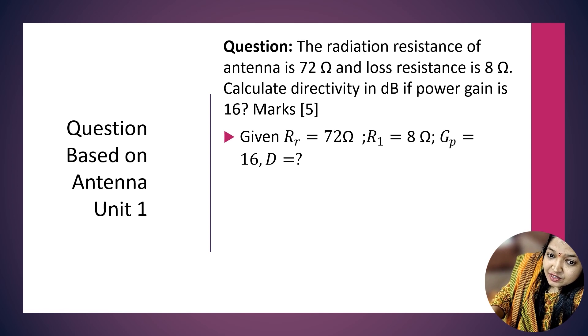First write down the given data: RL = 8 ohm, RR = 72 ohm, GP (power gain) = 16, and we want to find directivity.